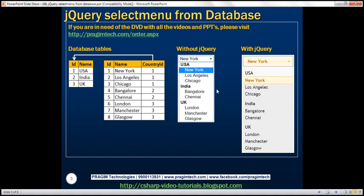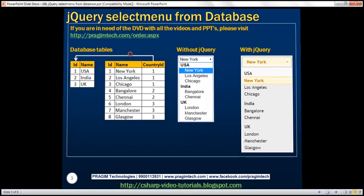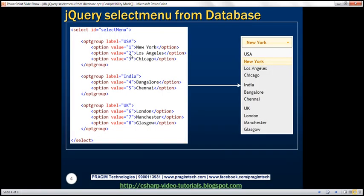So let's see how to build this drop-down list using data from these two database tables. In order to build a drop-down list like this, we have to build an HTML structure that looks like this. We have a select element, and within it we have three option group elements. Within each option group, we have the cities belonging to that specific country. First we have USA and all its cities. The value is the country ID and the label is the name of the country, everything coming from the database.